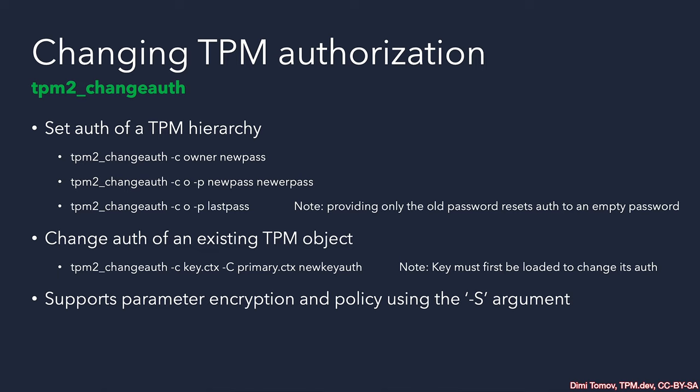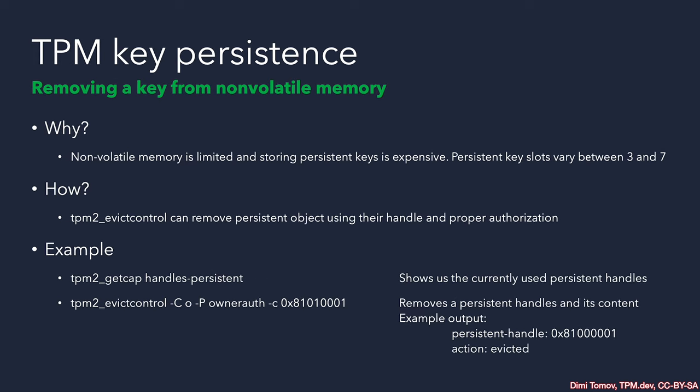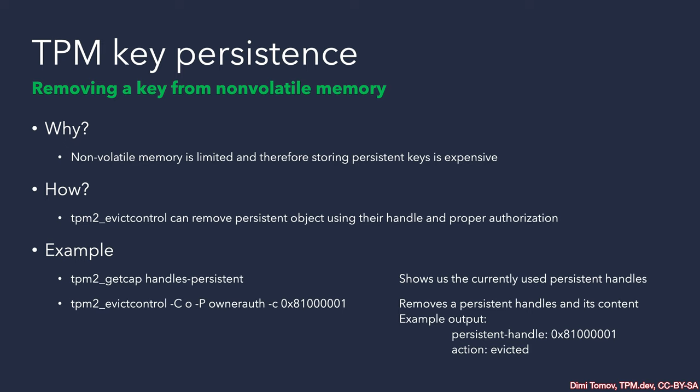Let's get back to our persistent object. For some reason, we may need to remove a persistent key — perhaps we are rotating keys, ran out of persistent key slots, or need a different key for an upgrade process. In this situation, we use the same TPM2_EvictControl command. We need to provide the hierarchy of the object to evict and the proper authorization. If you haven't set an authorization for the hierarchy, you have an empty password, which means anyone on the system can remove your persistent key and break the system.